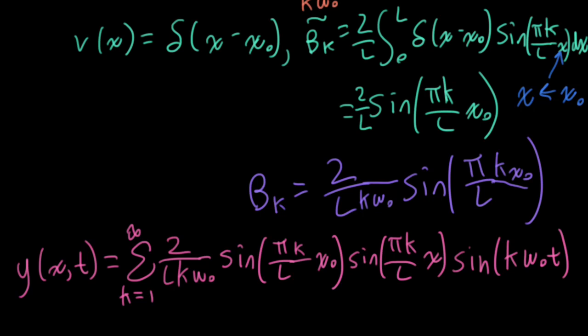So notice that I have two different sine structures here in space. One has to do with where we hit the string with the hammer. The other has to do with where we're listening. And this is a general idea. The spatial modes result in a structure where, depending on where you put the pickup, you'll hear different harmonics to varying degrees.